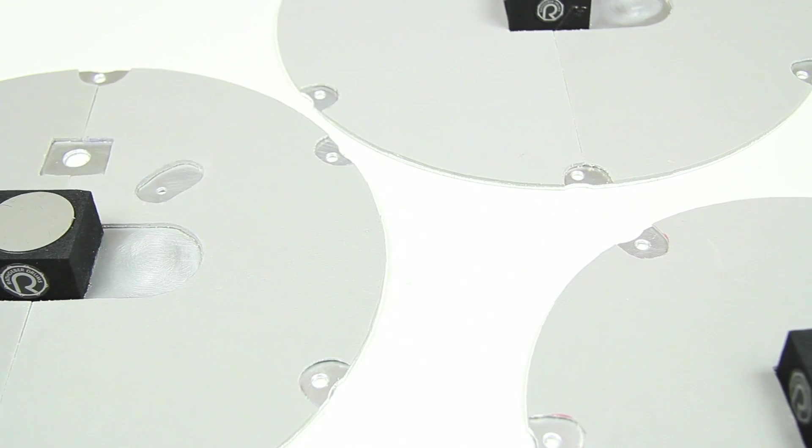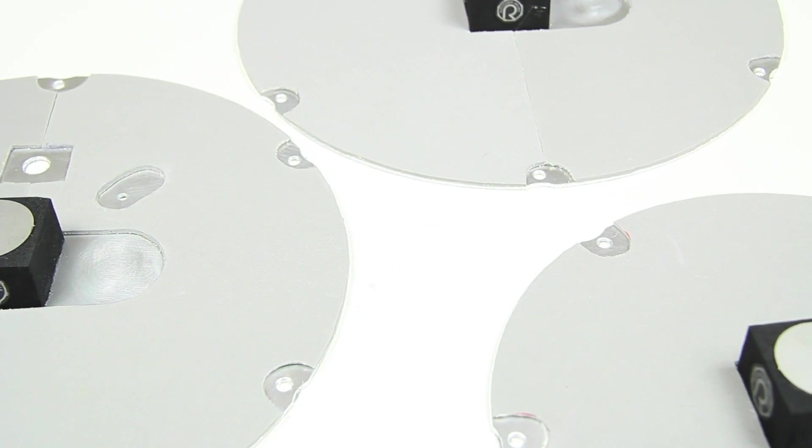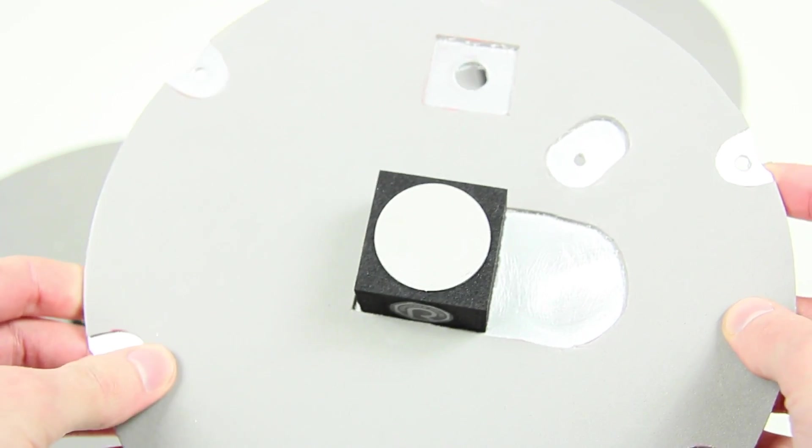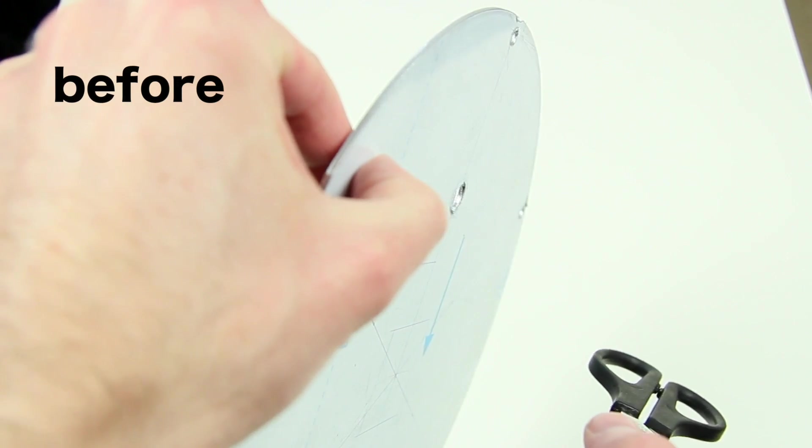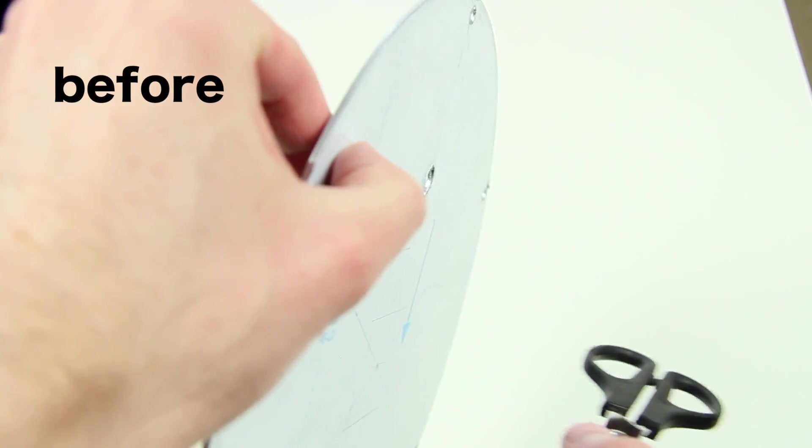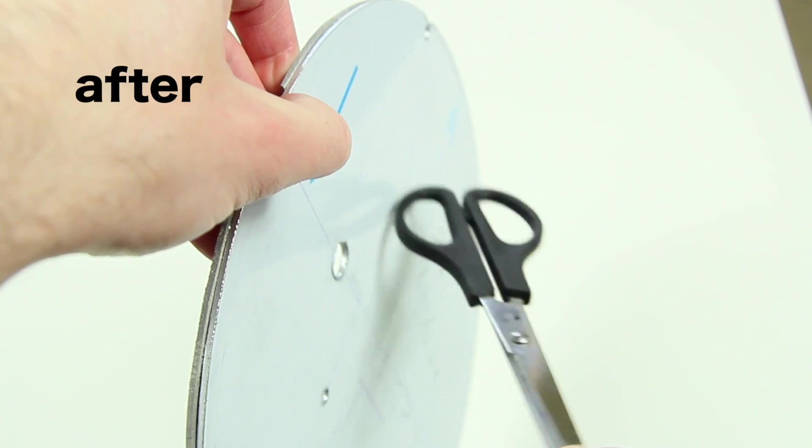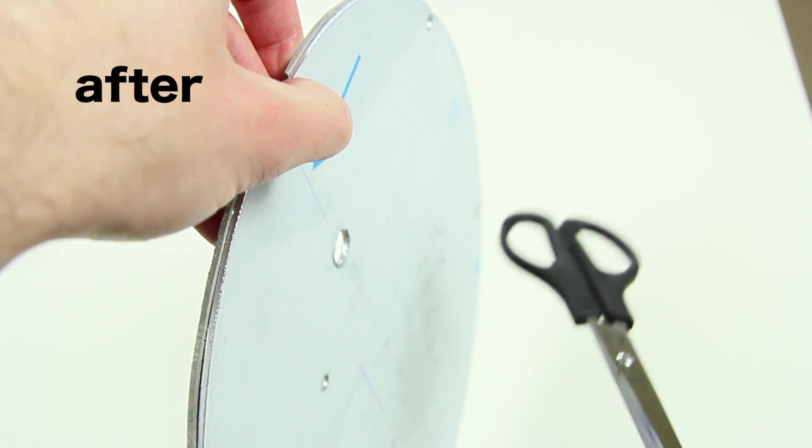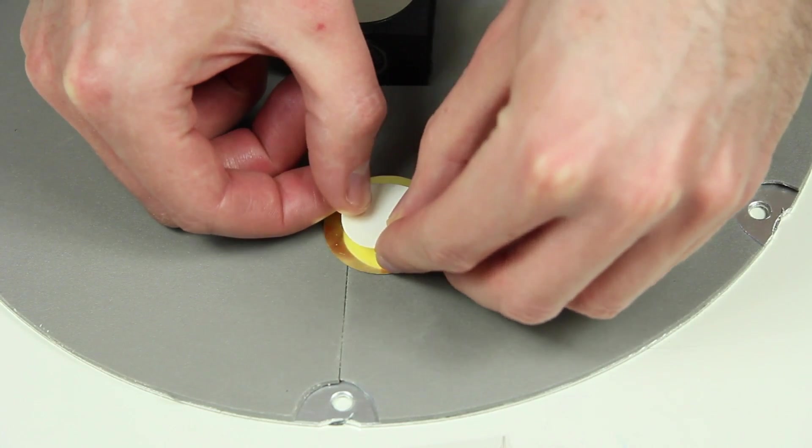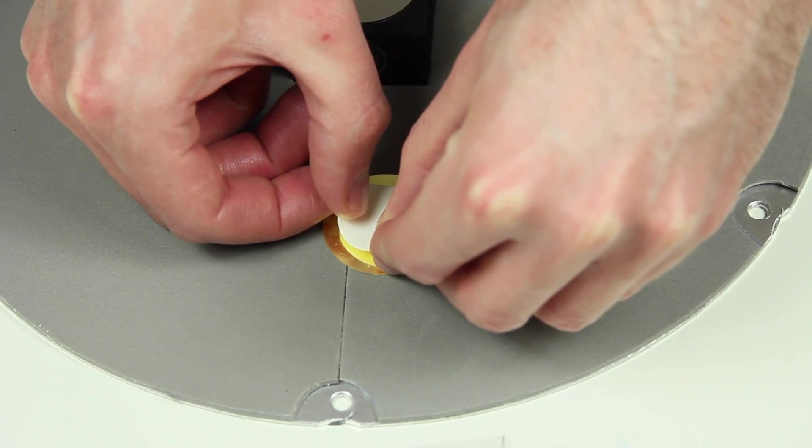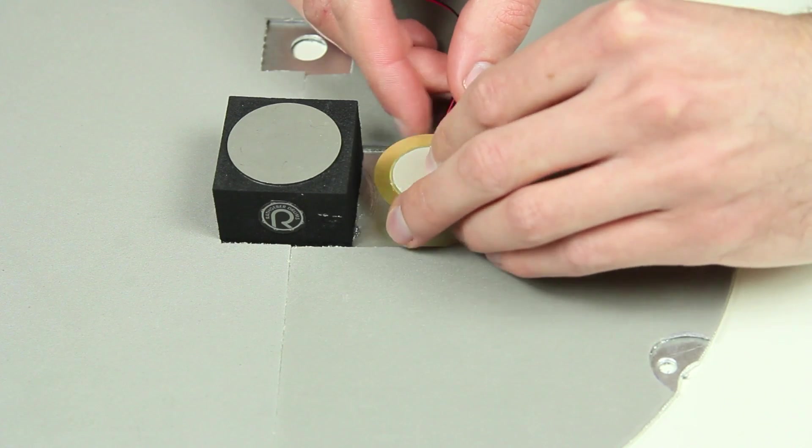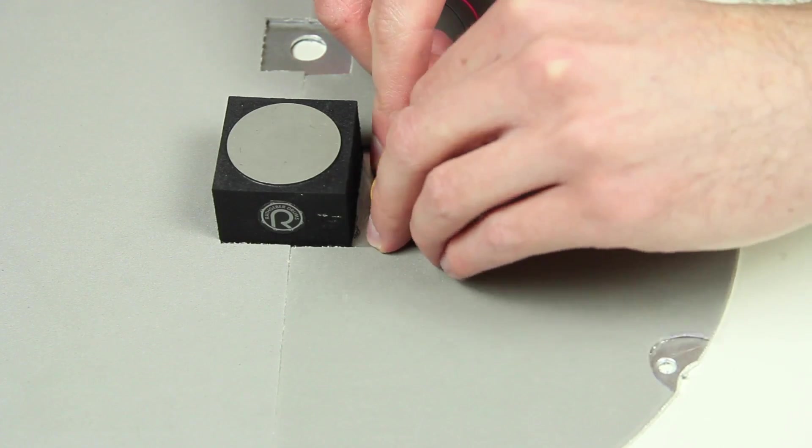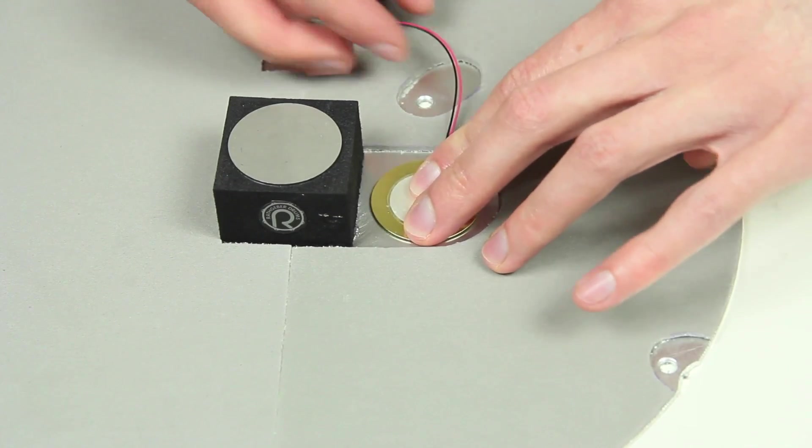As you can see, the holes in the spot for the rim trigger stays free. The rim piezo gets attached via foam adhesive dot with a smaller diameter to ensure a more sensitive trigger result. The dot needs to be smaller than the piezo.